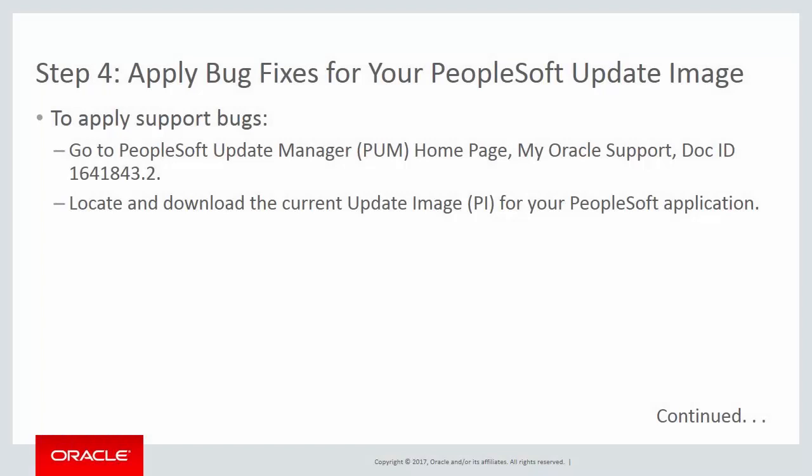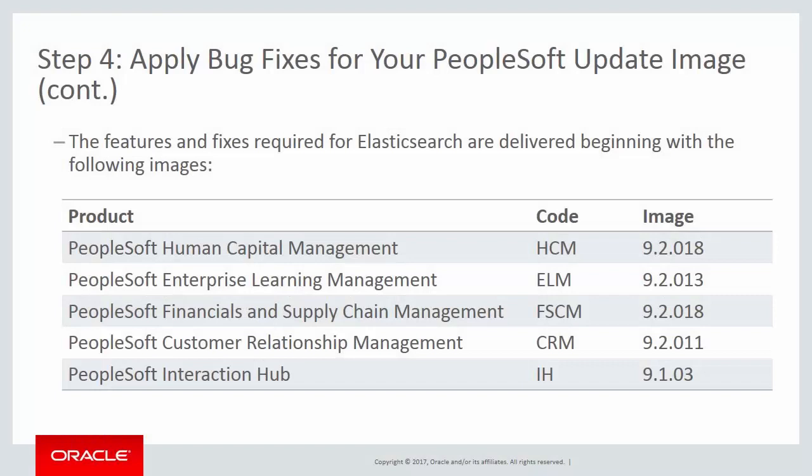After completing the PeopleSoft integration with Elasticsearch, identify and apply any necessary bug fixes delivered with the latest PeopleSoft update image. Go to the PeopleSoft Update Manager homepage on My Oracle Support and download the current update image for your application. Features and fixes for Elasticsearch are delivered beginning with: HCM image 9.2.018; PeopleSoft Enterprise Learning Management image 9.2.013; PeopleSoft Financials and Supply Chain Management 9.2.018; PeopleSoft Customer Relationship Management 9.2.011; and PeopleSoft Interaction Hub 9.1.03.